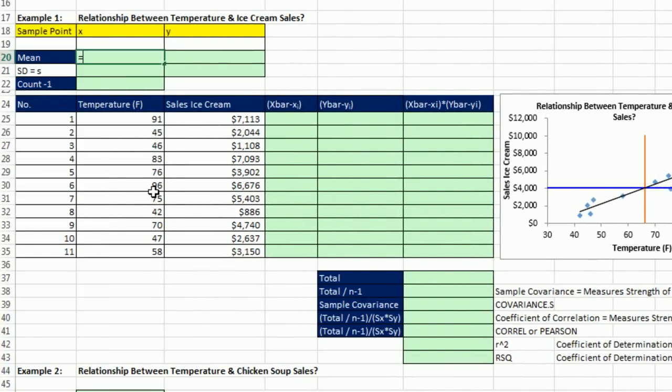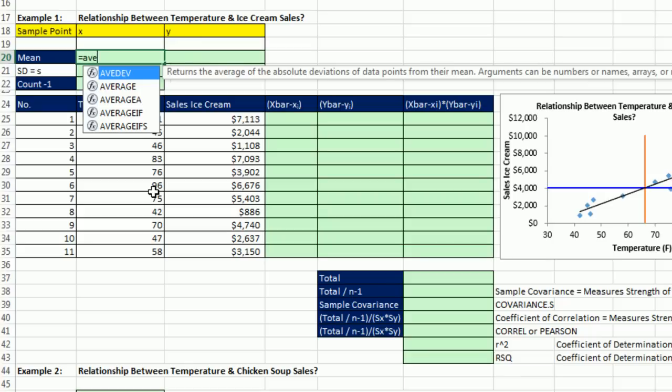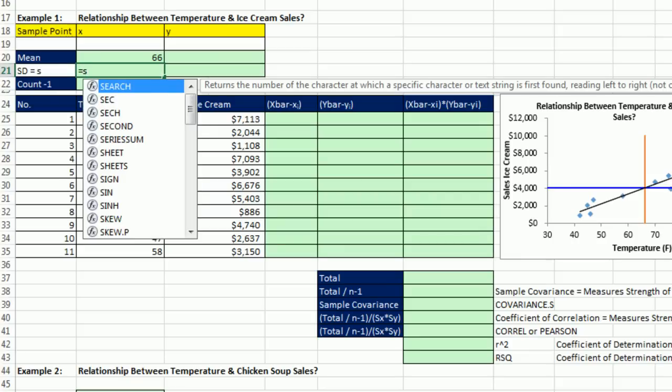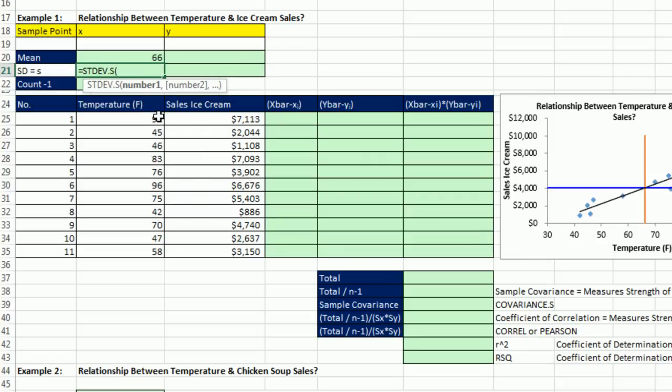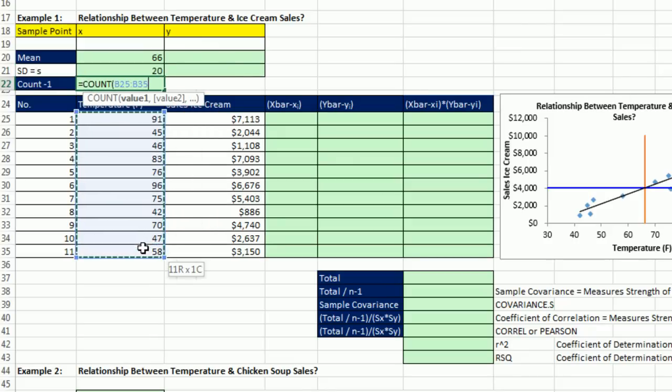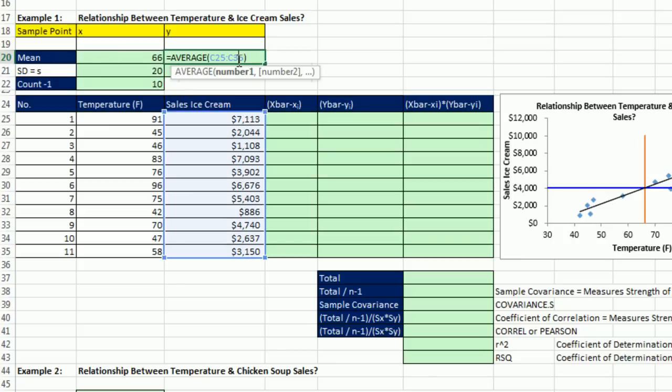I better scroll over here. We're going to calculate the mean for our x values, Fahrenheit. Enter. Our sample standard deviation. Notice these are relative cell references. Enter equals count, and I'm going to highlight. That'll count them, close parenthesis, minus 1. Now those are relative cell references, so I'm going to copy these over to get our x bar and our standard deviation for y.